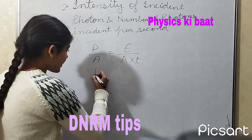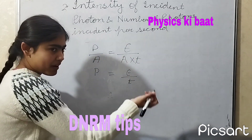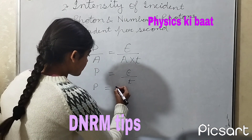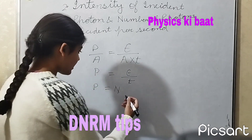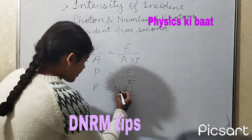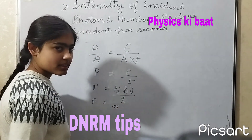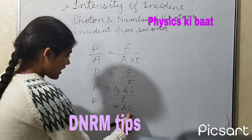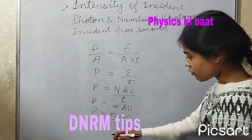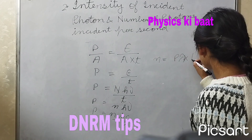We can cancel out the area from both LHS and RHS, and we get power is equal to E divided by T. From Planck's theory, we also know that energy is the product of the number of photons incident in time T, Planck's constant, and frequency, divided by time T. Now, N divided by T can also be written as the number of photons incident per second — small n. So power equals n × h × ν, where h × ν can be written as hc/λ. To calculate n, the number of photons incident per second, we get n = Pλ × (1/hc).